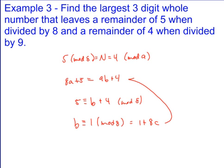So that means b is equivalent to 1 plus 8c. Plug that back in for b and I end up with 72c plus 9 plus 4, which gives you 13 plus 72c, which means that it's equivalent to 13 mod 72.